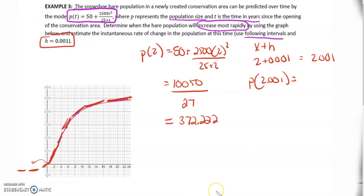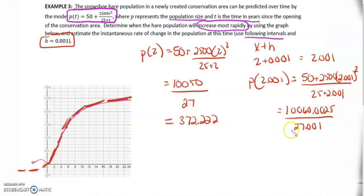P at 2.001: let's do 50 plus 2,500 times 2.001 squared over 25 plus 2.001. I get 10,060.0025 over 27.001. I get 372.5788. Let's round to three decimals.